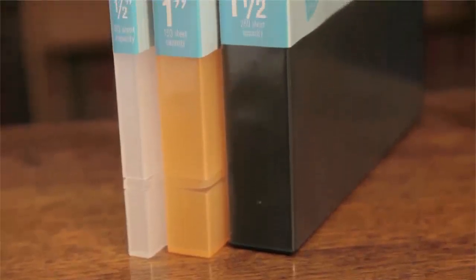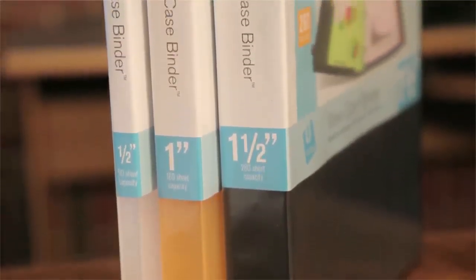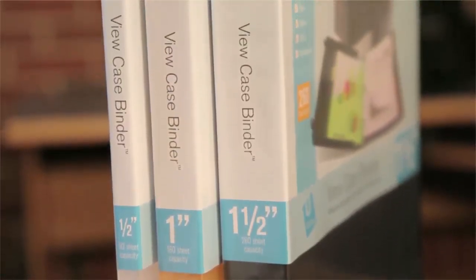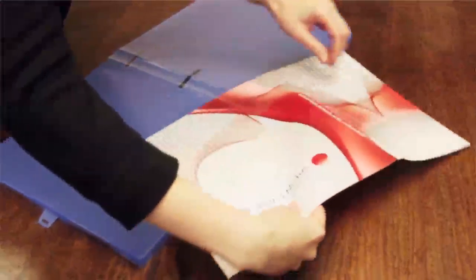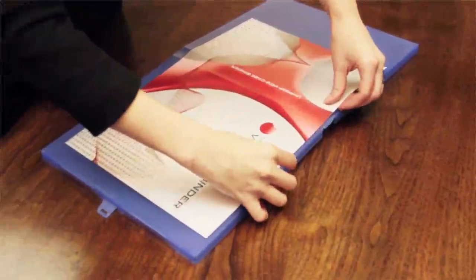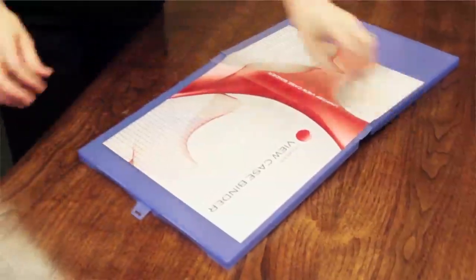With three standard spine widths, one half inch, one inch and one and a half inch, there is always a binder to fit your needs. The clear, full wrap overlay makes it easy to create a custom printed insert for labeling and cover design.